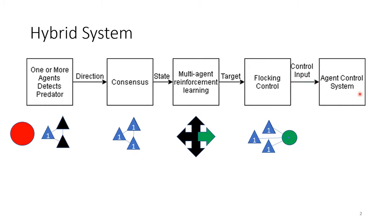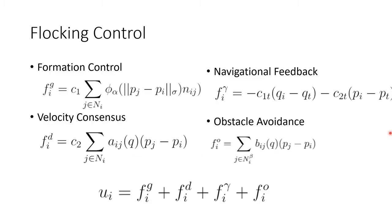The flocking control has four main components. First, you have formation control so that the agents are in some kind of formation. Next, you have velocity consensus so that the agents are moving at relatively the same velocity. Third, you have navigational feedback so the agents are moving towards a target location. Then you have the obstacle avoidance term so that the agents don't collide with obstacles in their path. These combined form the acceleration of the agent.